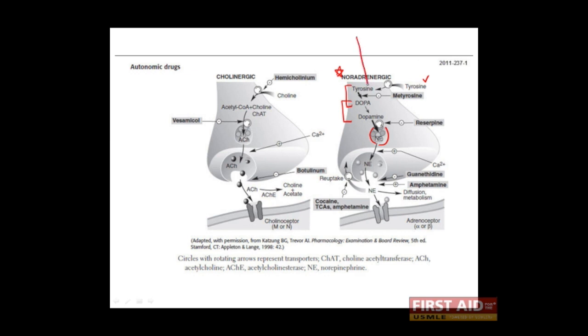Again, the propagation of an action potential into the nerve terminal results in the influx of calcium, which then triggers the fusion of vesicles with the terminal cell membrane, resulting in the release of norepinephrine. Norepinephrine can then bind to its respective receptors, here shown as the alpha or beta adrenergic receptors, which include the alpha-1, alpha-2, beta-1, or beta-2 receptor types. Once bound, these receptors can trigger an intracellular pathway.